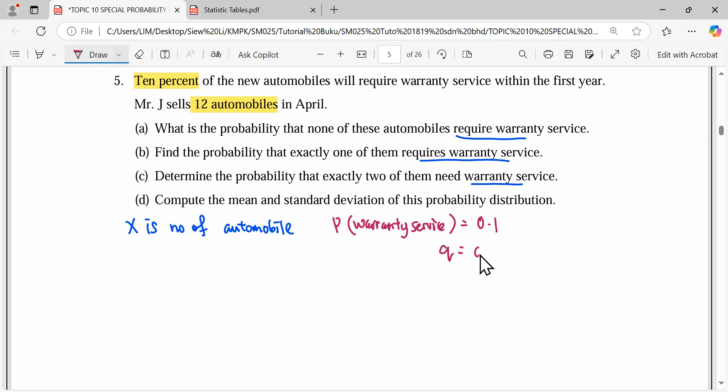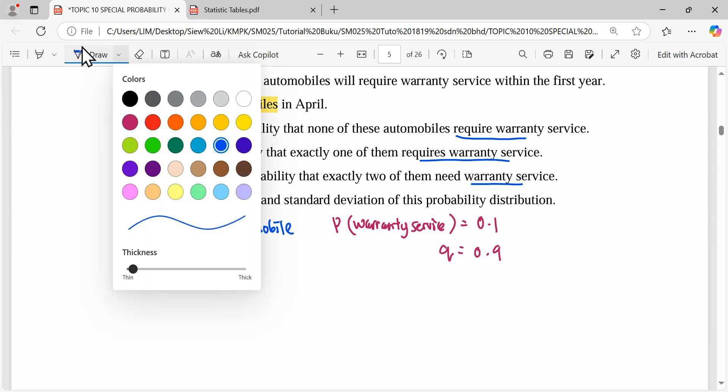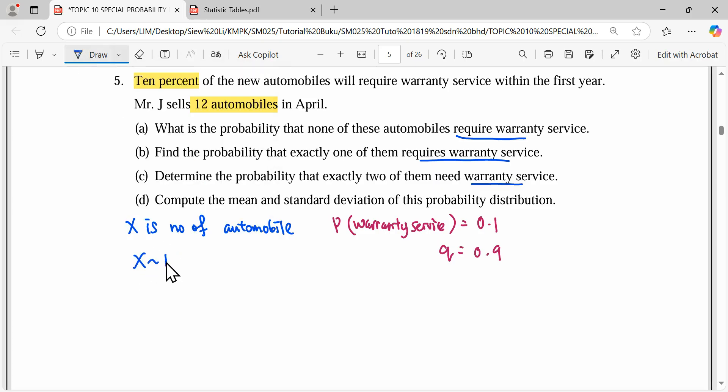So Q will be the opposite, which means 0.9. For the distribution, we write it first: X is a binomial distribution with a sample of 12, and the probability of the situation is 0.1.